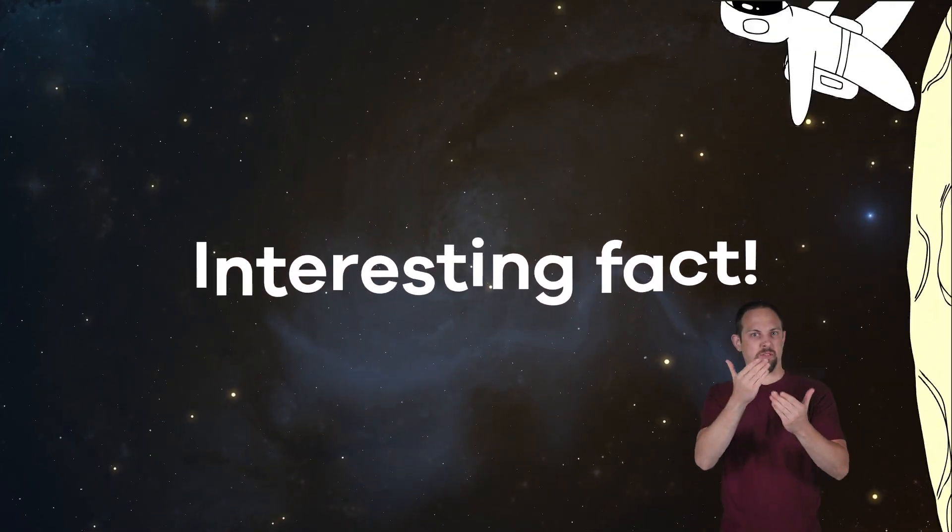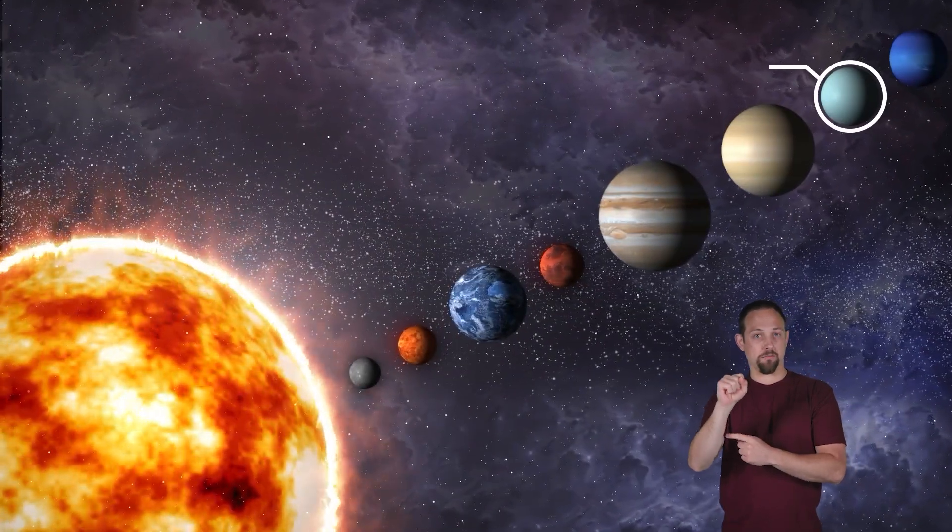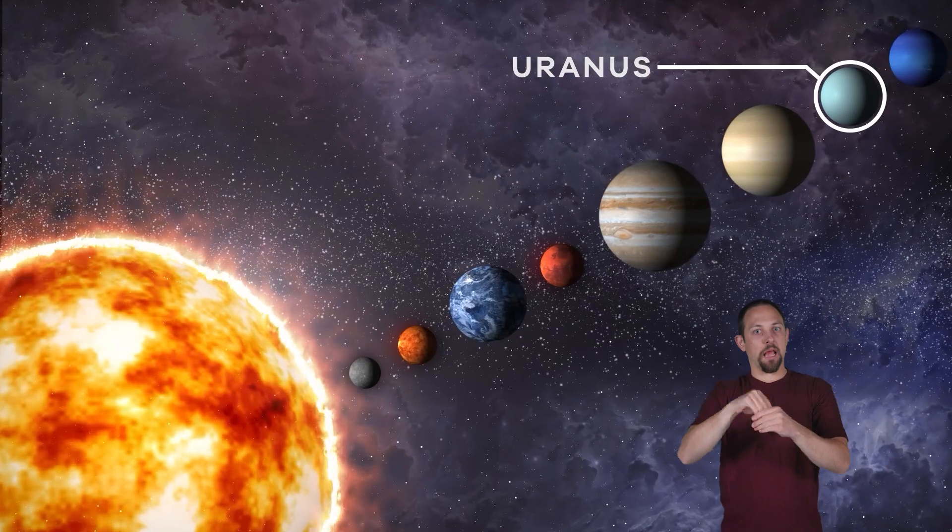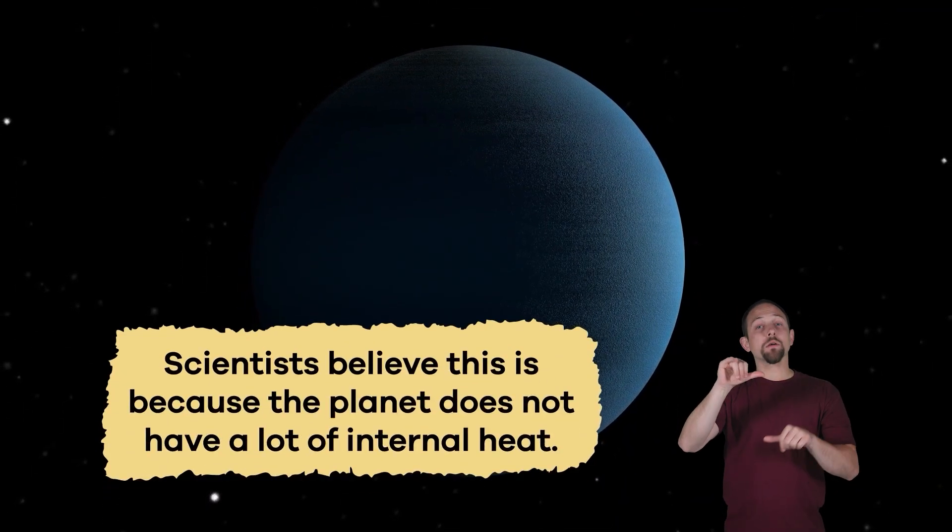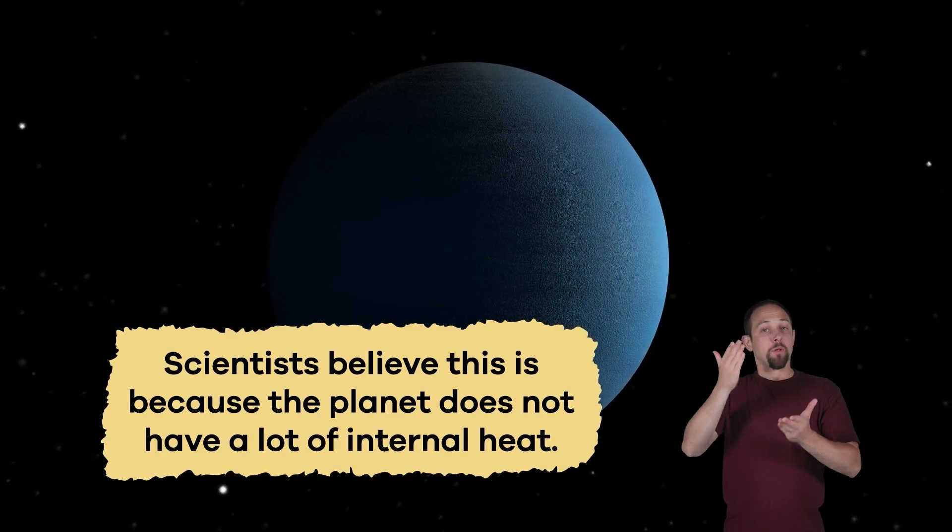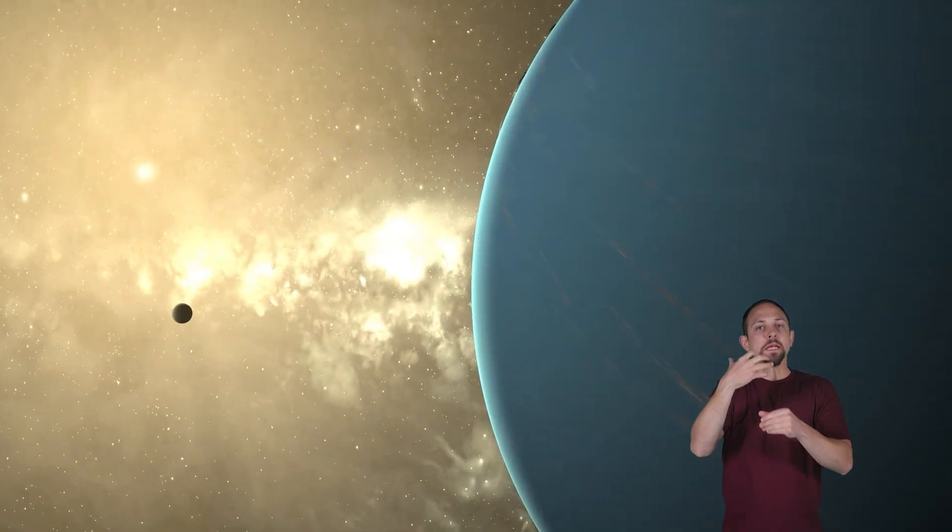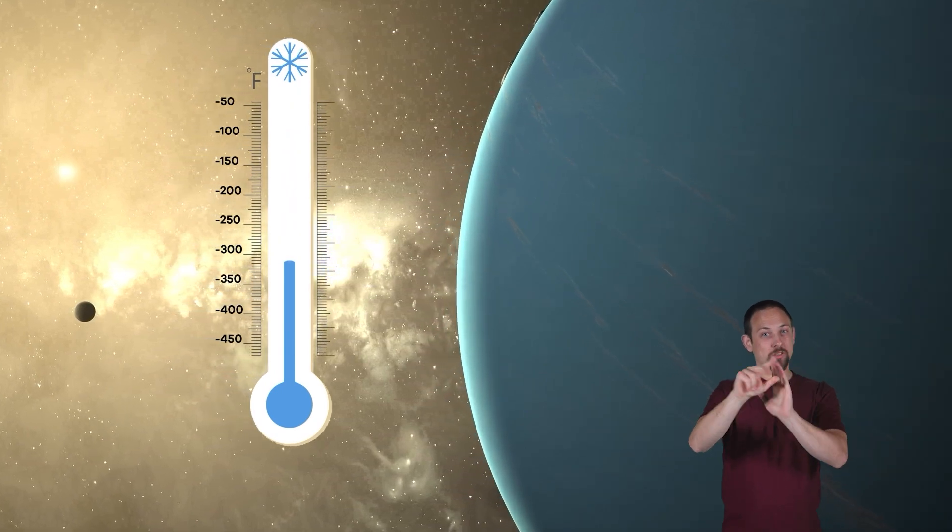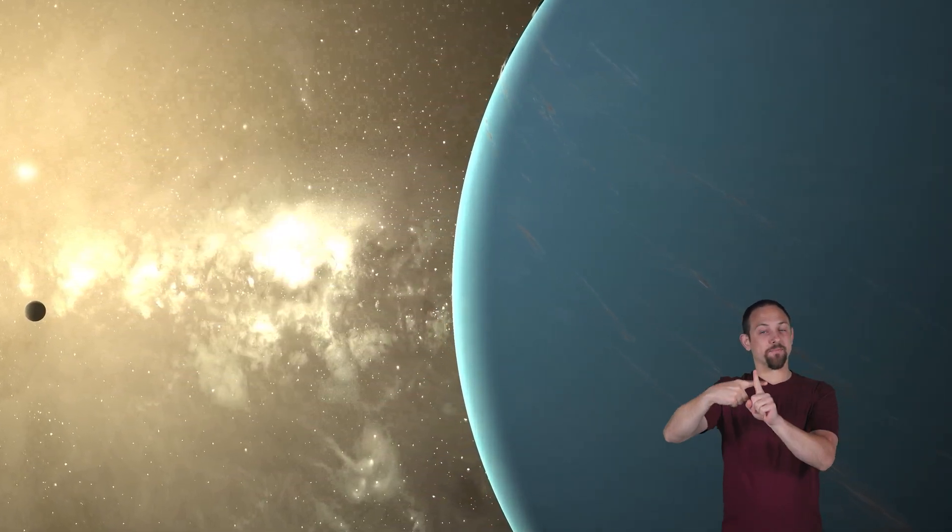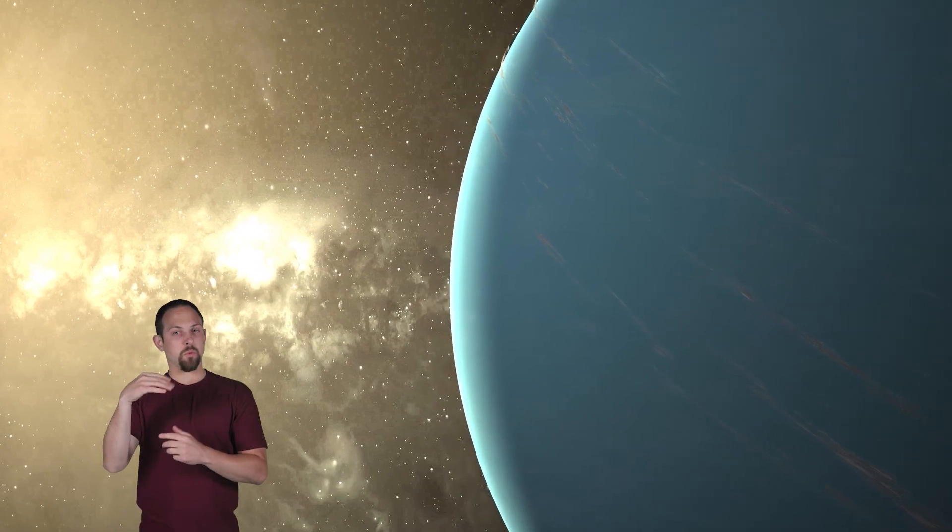Here's an interesting fact about Uranus. It is the coldest planet in our solar system, even though it is not the farthest away from the Sun. Scientists believe this is because the planet does not have a lot of internal heat. And with temperatures that can drop to around negative 357 degrees Fahrenheit, Uranus is one of the most difficult planets to study.